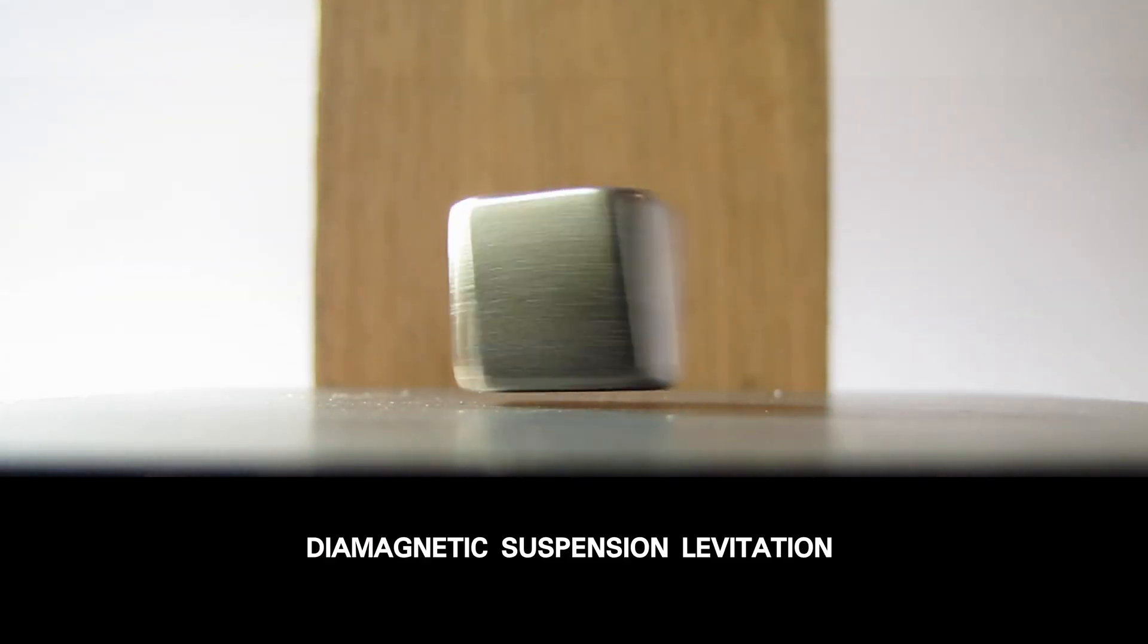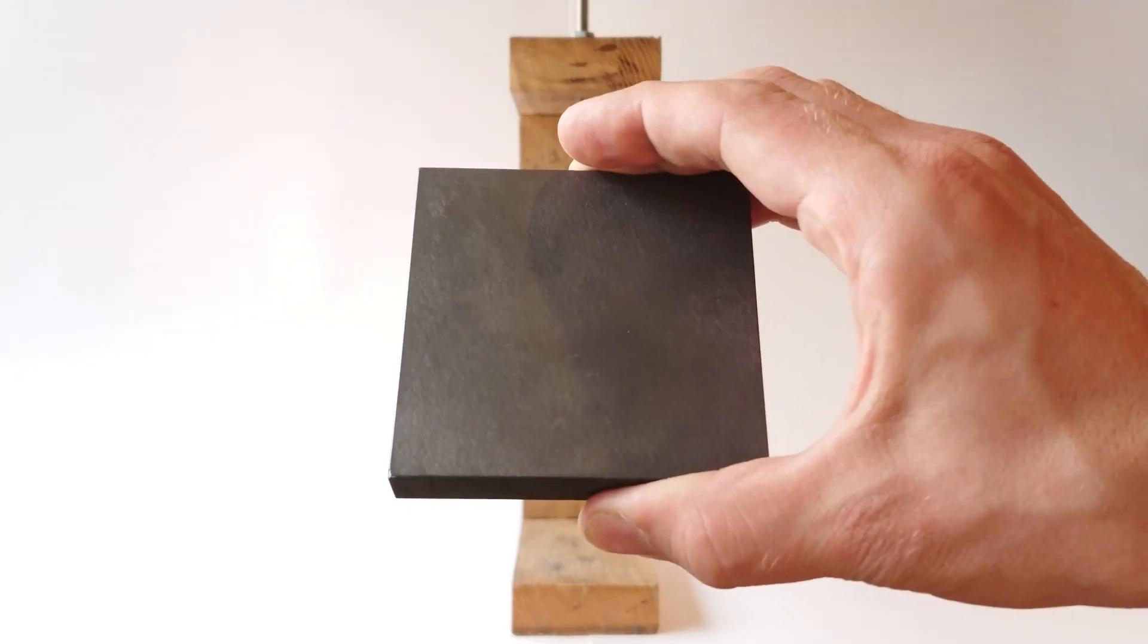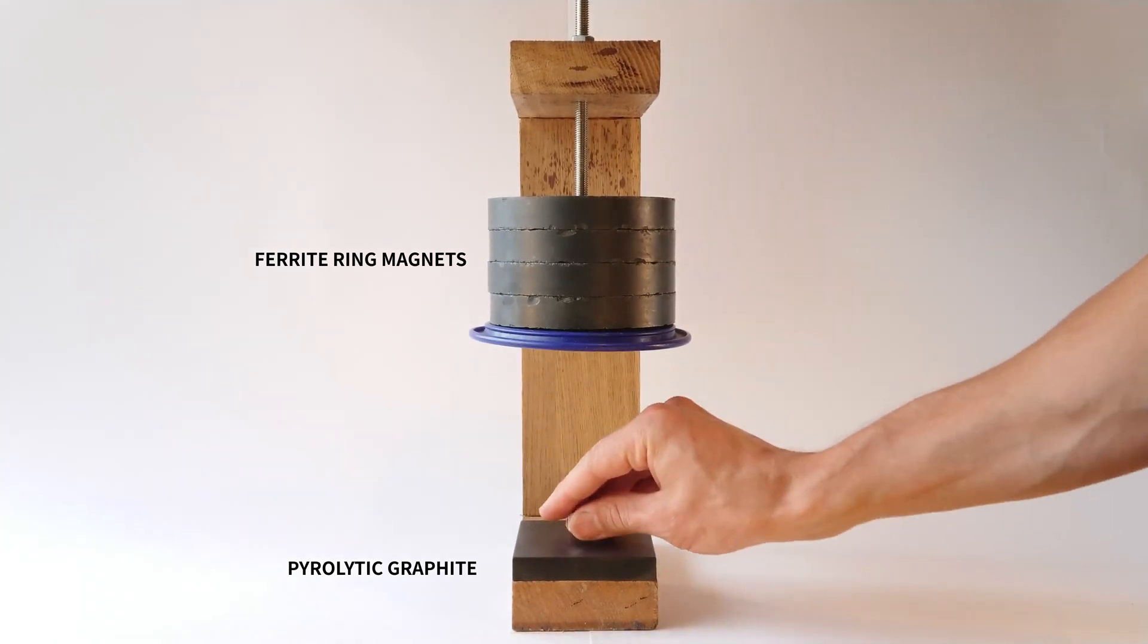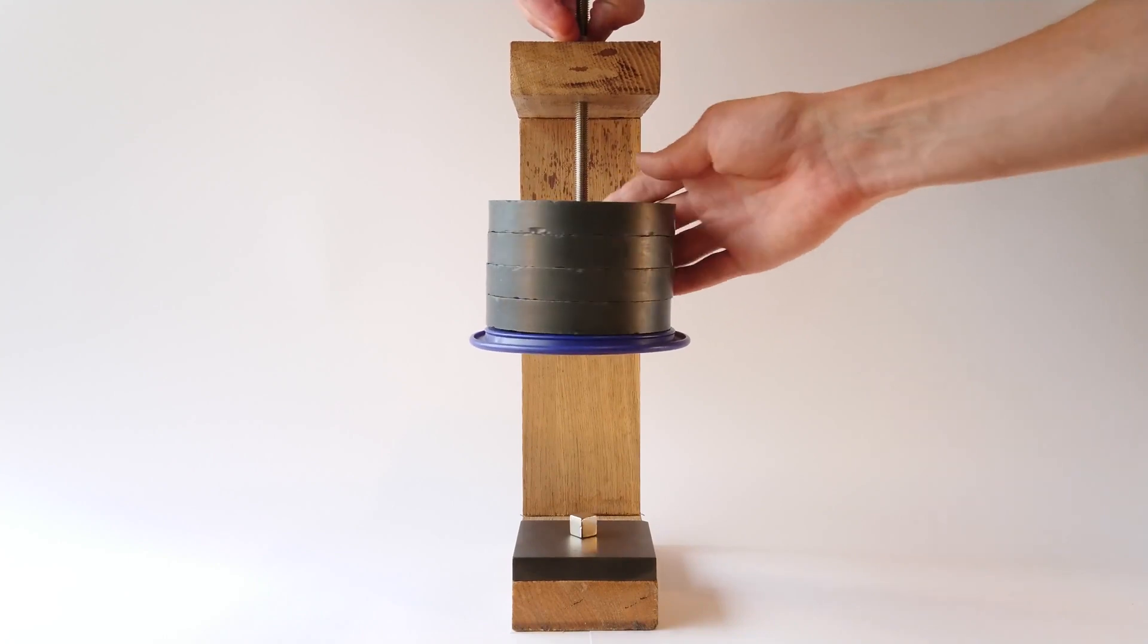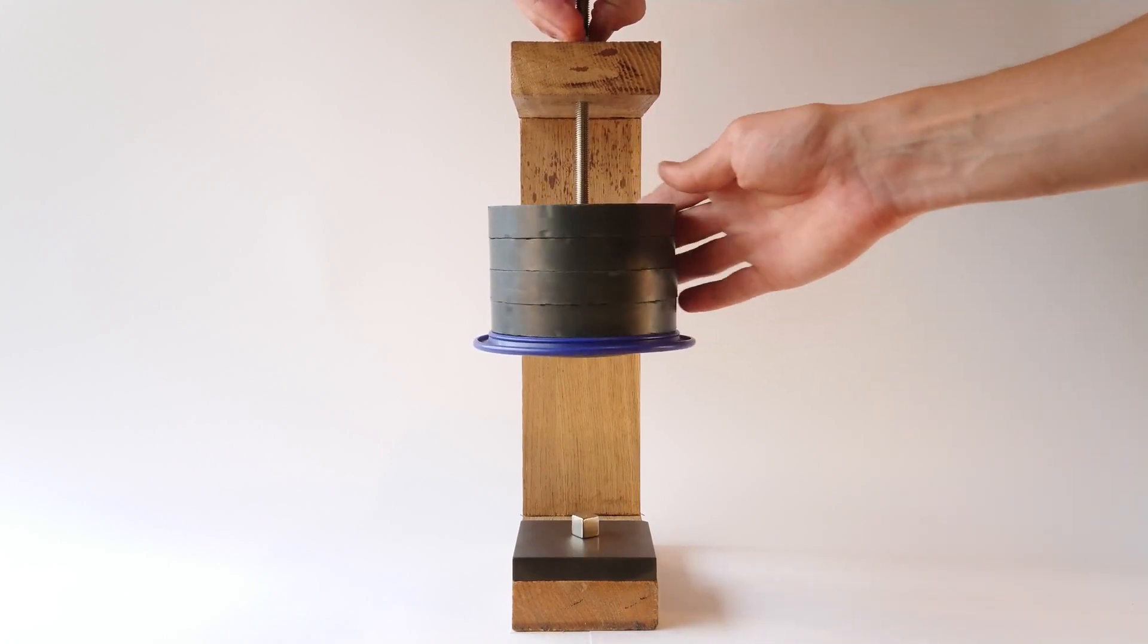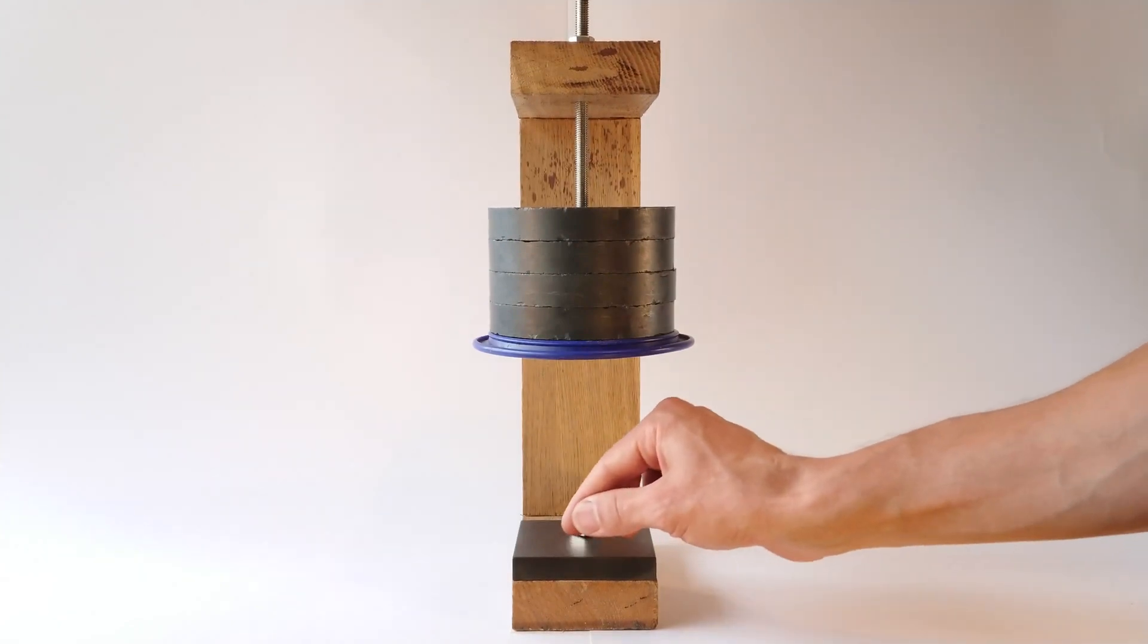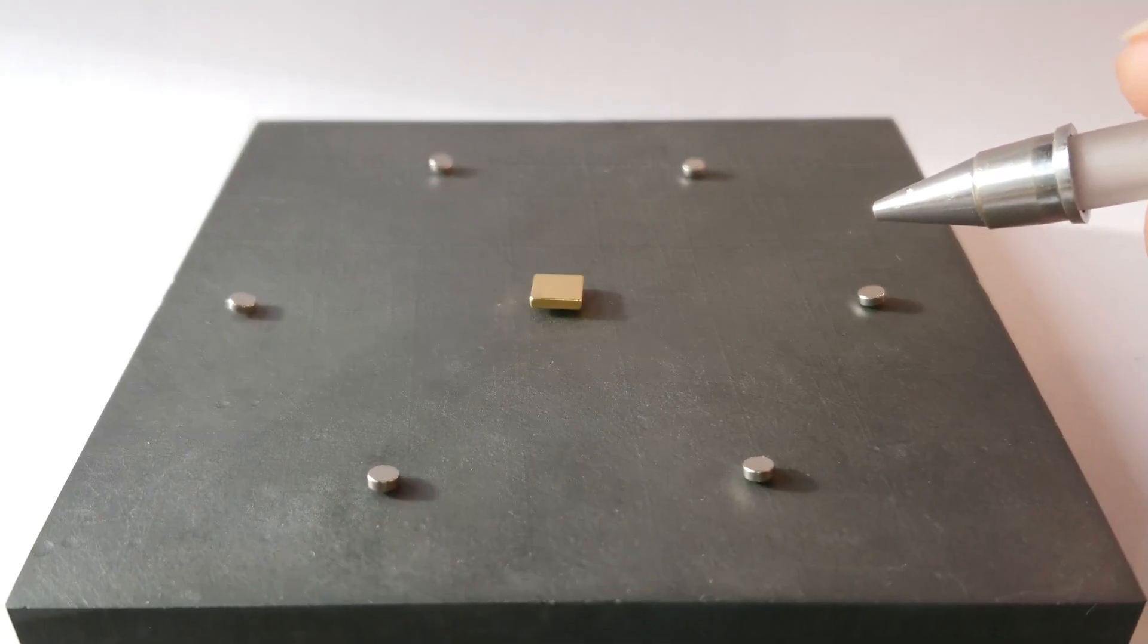Diamagnetism refers to weak repulsion between a diamagnetic material and magnet regardless of its poles. A second magnet can be used at a fixed distance to offset some of the magnet's weight. It is then possible for the diamagnetic effects to support the remaining mass of the magnet and so achieve stable and passive levitation.